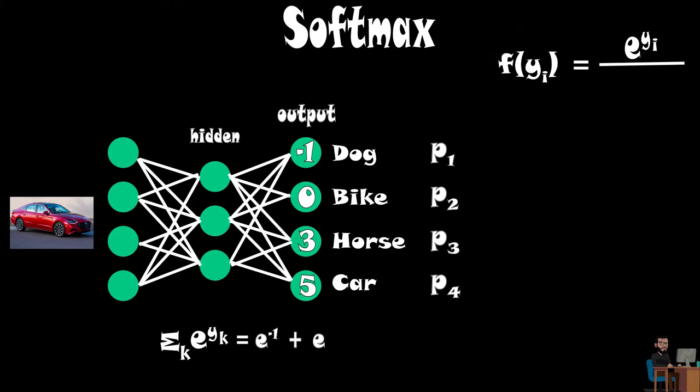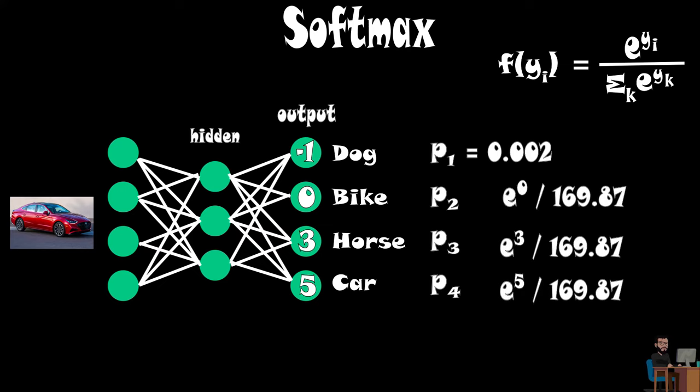Let's calculate sum of exponential for each class, which is 169.87. Now we have the denominator part. So probability for class 1, which is exponential of minus 1 over previously calculated denominator, results 0.002. Similarly, we can